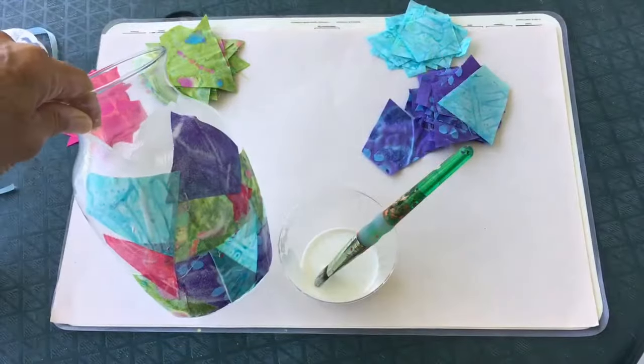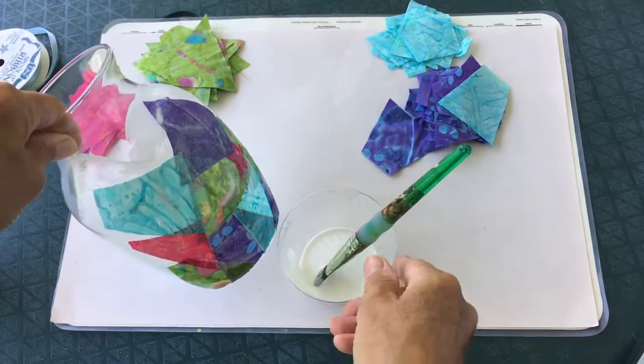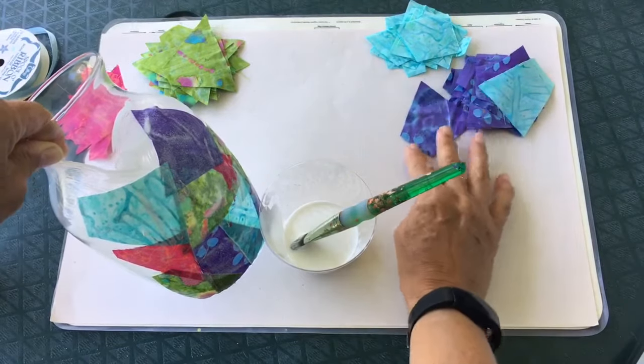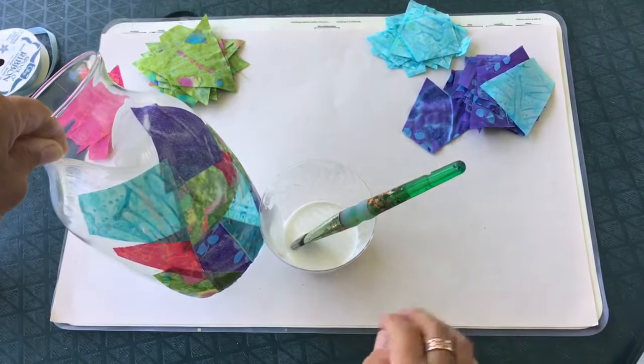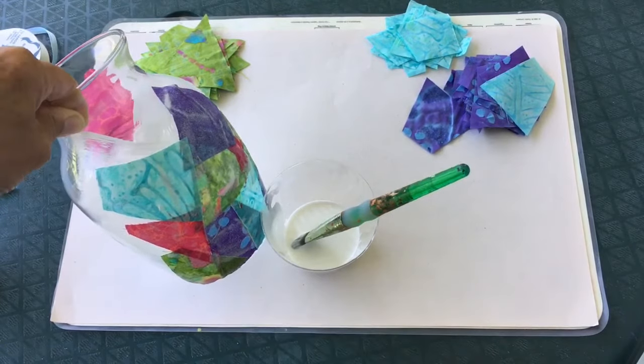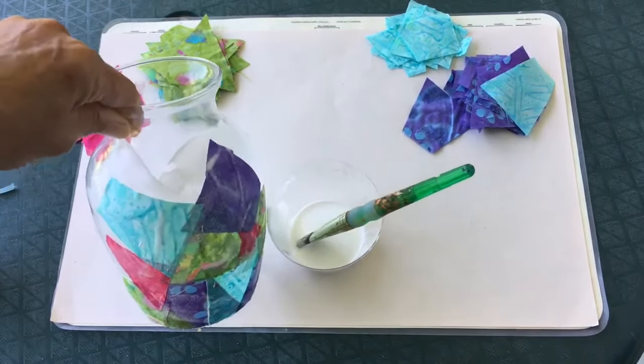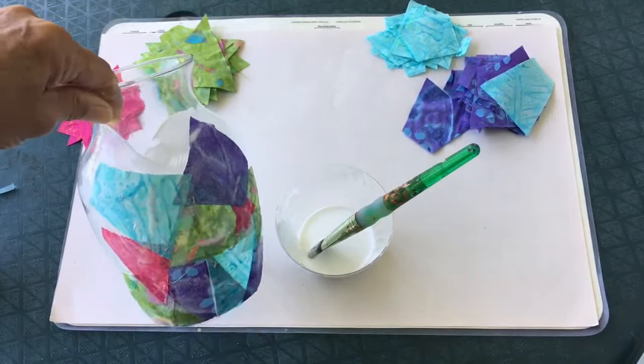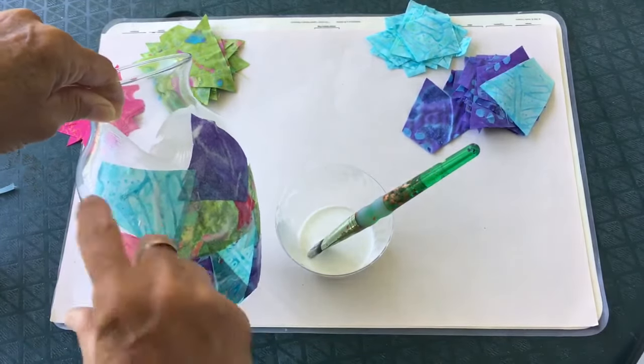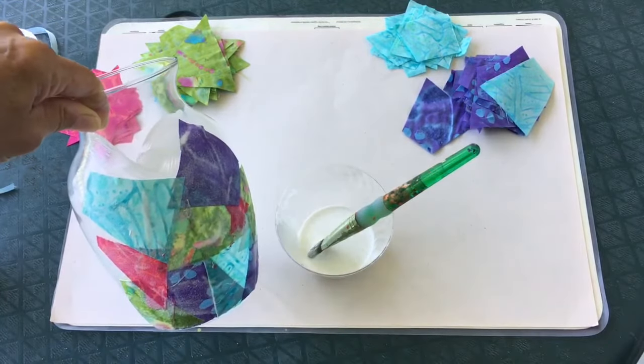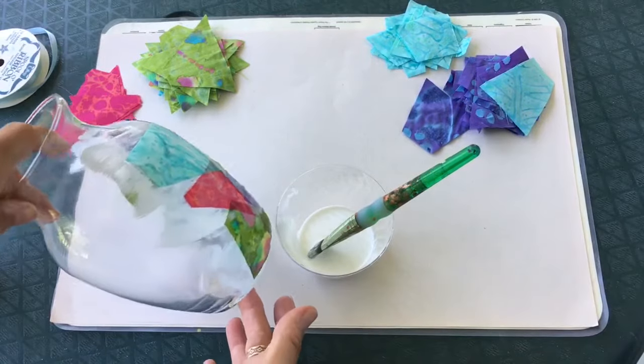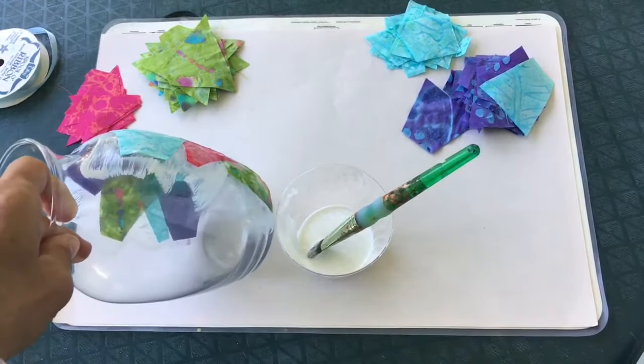A couple of things I wanted to mention is during your gluing you will want to keep your fabric piles away from the drippy sticky mess that's going on down here. The other thing is you do not have to cover the entire vase. You might want to leave the top just clear or you might want to just do a band of fabric in the center. I'm going to cover my whole thing but really you can make up your own rules on your design.